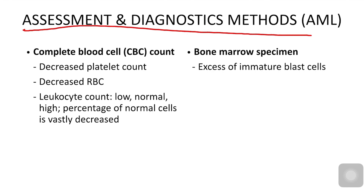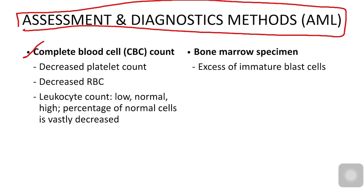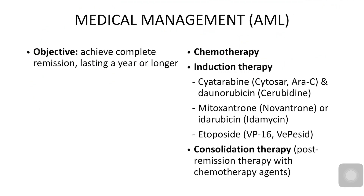For AML diagnostics, we use a CBC to determine decreases in platelet count, RBC, and leukocyte count, since the percentage of normal cells is vastly decreased. Bone marrow aspiration is also performed to check for excessive immature blast cells.